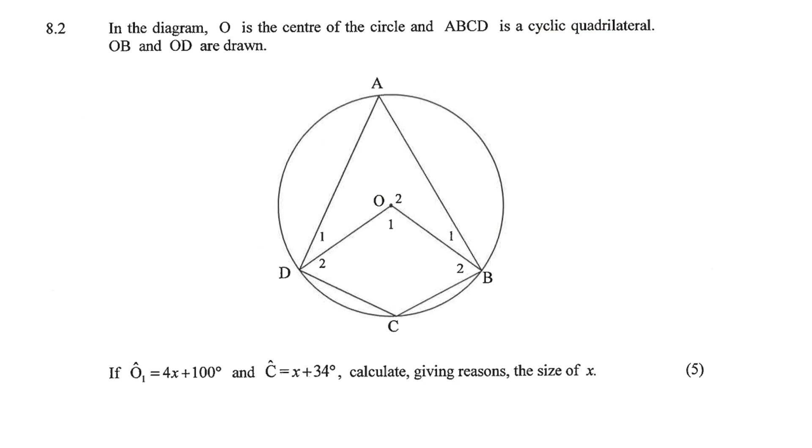In the diagram, O is the center of the circle, and ABCD is a cyclic quadrilateral. It touches all four sides of the circle, so it has to be a cyclic quad. OB and OD are drawn.